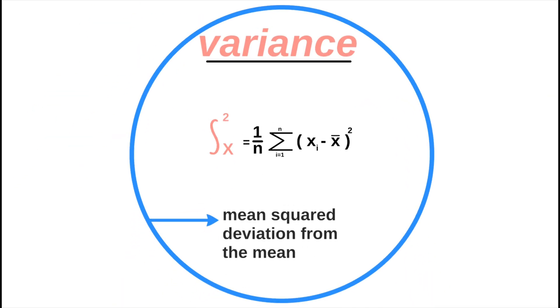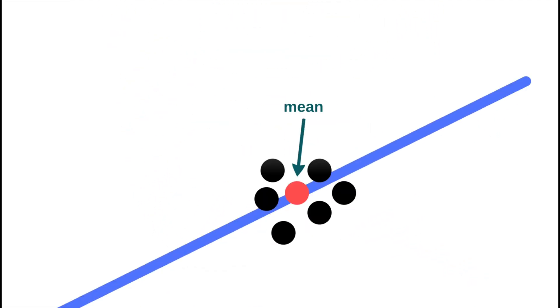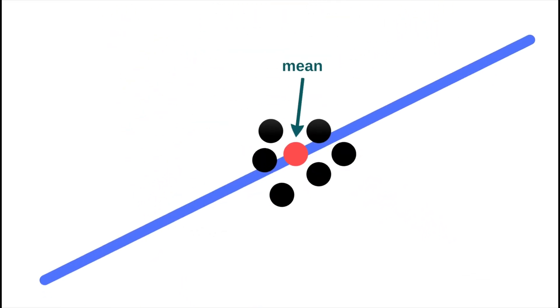Variance is the mean squared deviation from the mean. In other words, with the help of variance, we want to determine how far, on average, the individual values of a series of numbers lie from the mean of the series. In statistics, we refer to this as the spread around the mean.